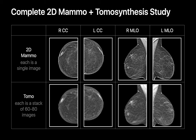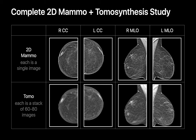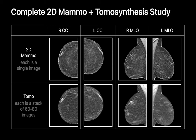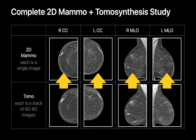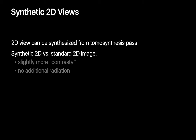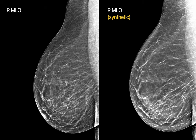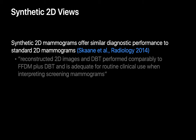In many practices, both 2D mammogram images and tomosynthesis images are used for interpretation. While the 2D mammography images and tomosynthesis images may be individually acquired, with newer equipment, 2D mammography images can be synthetically generated from the tomosynthesis acquisitions, which cuts down both study time and radiation exposure. Compared to standard 2D mammography images, synthetic 2D mammography images appear slightly more contrasty. But the medical literature suggests that synthetic 2D mammograms are of equivalent diagnostic performance compared to standard 2D mammograms.